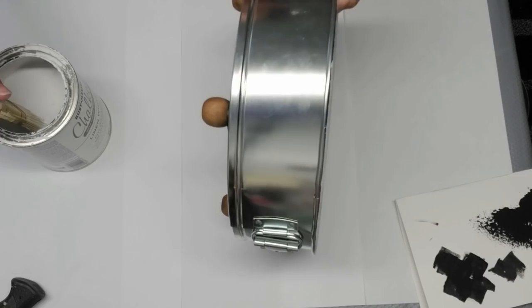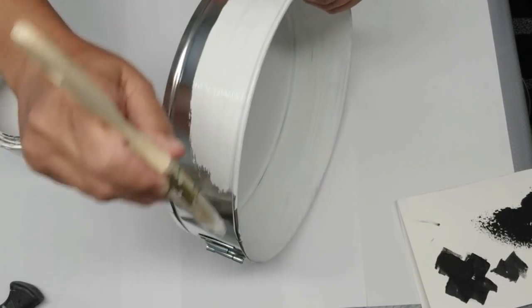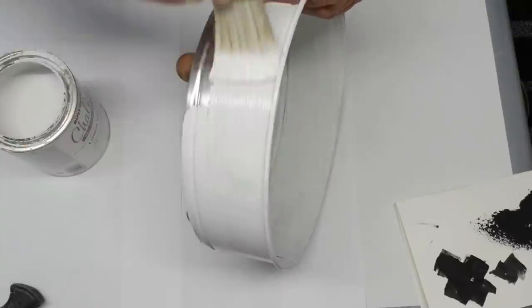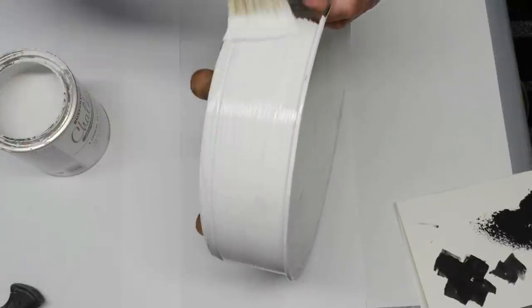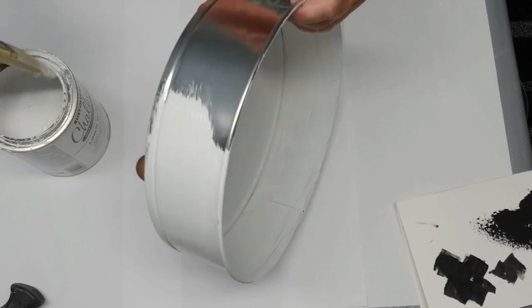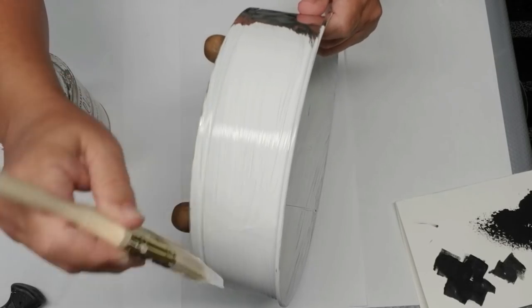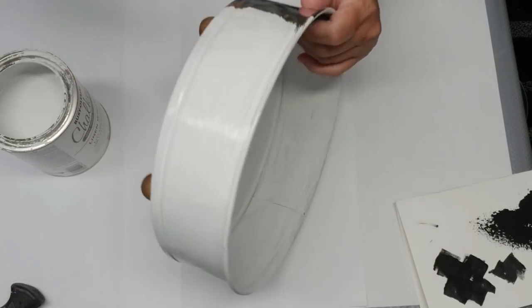Today I'm using some springform pans to create an enamel look tiered tray. You'll probably recognize some of these pans. They're used to make cheesecake because the bottom pops right out of them. There's a latch that allows the bottom to just open up and then you've got your cheesecake all set to go.